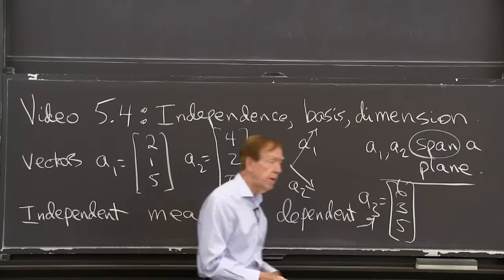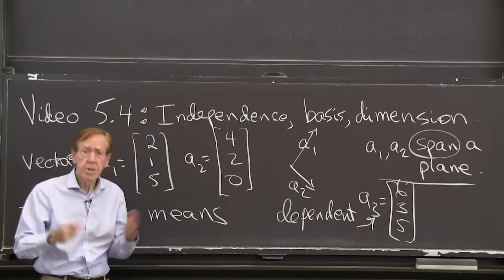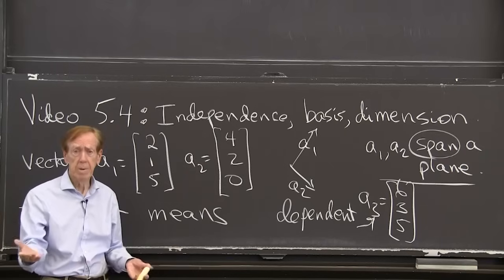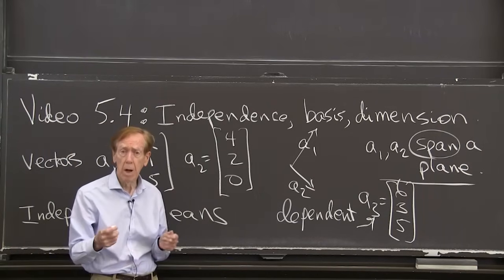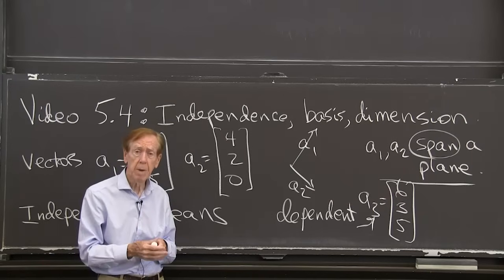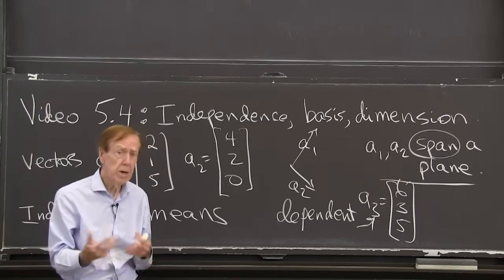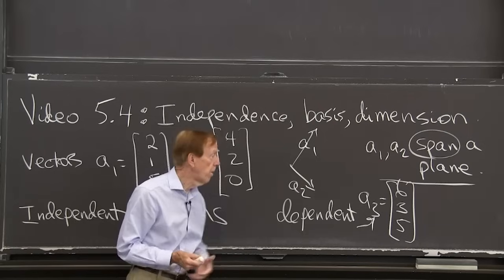a1 and a2 and a3 together, that's too much. Too many vectors for a single plane. Their vectors are dependent. And a basis has to be independent vectors. You have to need them all. We don't need all three here.